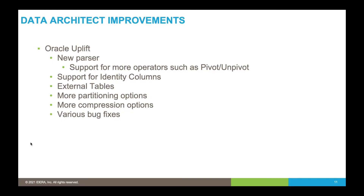Let's now look at the features we've added to Data Architect. We've done a huge amount of work around Oracle. In our last release, version 19.0, we did a big uplift on SQL Server with a brand new parser - we've done the same for Oracle. The new parser supports all the current grammar of Oracle, so it's no longer failing on operators. There's full support for operators such as pivot and unpivot, identity columns - which you've been asking for for a long time - support for external tables, and more options around partitioning and compression.